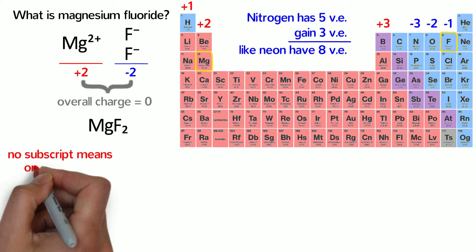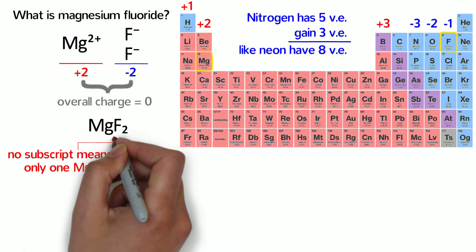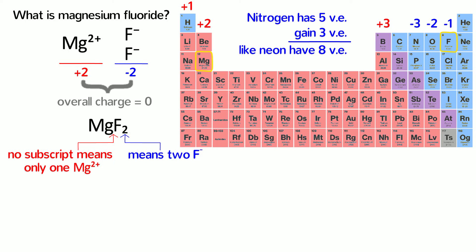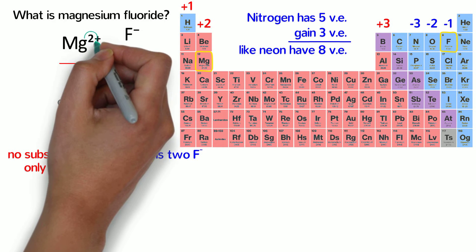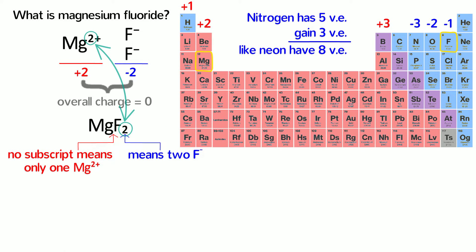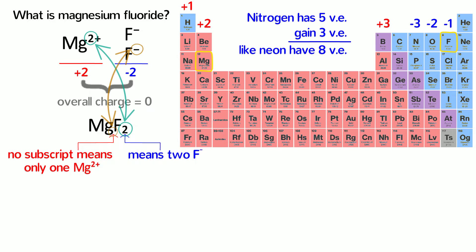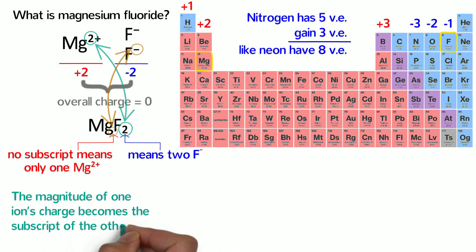No subscript after Mg means there is only 1 magnesium in the formula, and the 2 after F means there are 2 fluorides. Now let's pause and think about how the formula is related to the charges of the ions. Notice how the 2 charge of magnesium becomes the subscript of fluorine, and the 1 charge of fluoride becomes the implied 1 subscript of magnesium. This is a general principle: the magnitude of one ion's charge becomes a subscript of the other element.